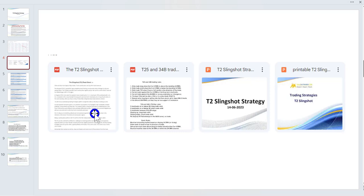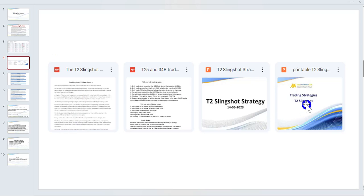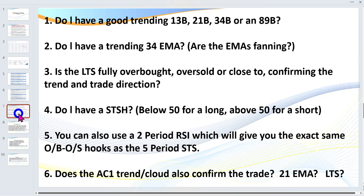I'll try to keep it to around 30 minutes. The PowerPoints — particularly the one on the right — and the cheat sheet on the left give you a really good rundown of the indicators we're using. I'll skip through those and let you review the PowerPoints and cheat sheet, but we'll get to the key points on trading the slingshot. First of all: do I have a good trending 13 EMA, 21 EMA, 34, and 89?